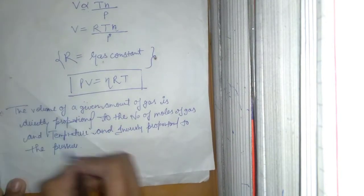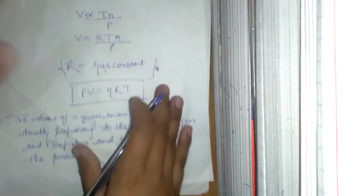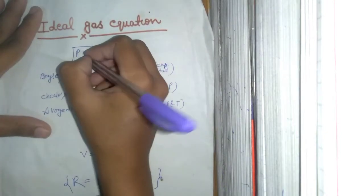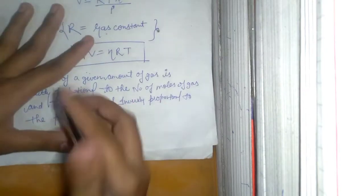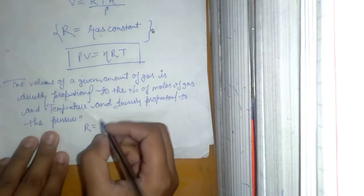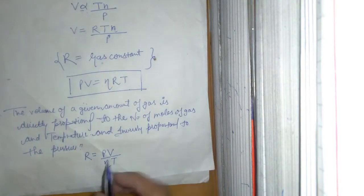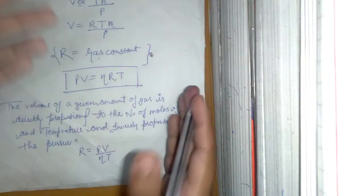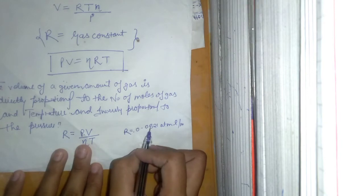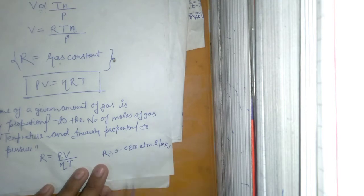And inversely proportional to the pressure. If you want to find the gas constant R from this equation, it will be R equals PV over nT. Here P is pressure, V is volume, n is number of moles, and T is temperature. The value of R is 0.0821 atm·liter per mole per Kelvin.